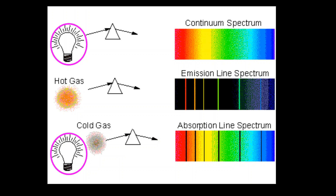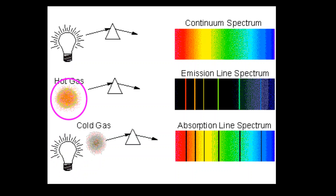We've talked about the continuous spectra, and we've seen how absorption lines are produced when a bright light passes through a cooler gas — the atoms in that gas subtract some light. But what if you have a hot gas glowing? The hot gas will produce emission lines. What do you notice about the emission lines and the absorption lines? One gas is hot, the other is cold, but the lines are in the same place — the same wavelengths. That tells you they're both the same gas.